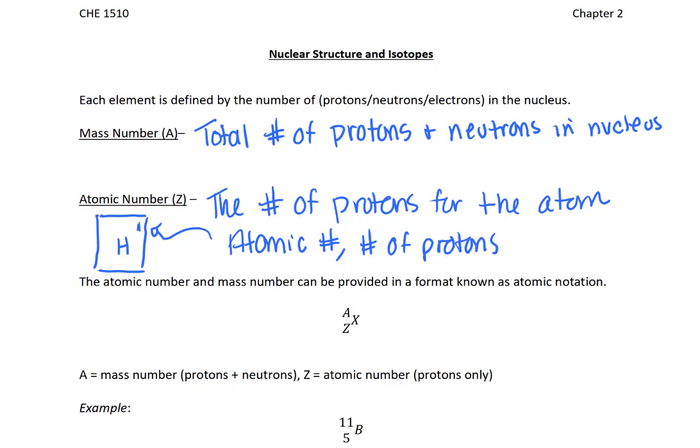So we can come back up to here and say that each element is defined by the number of protons in the nucleus. If that number of protons changes, then the identity of the element changes. So if you added a proton, you don't have hydrogen anymore. Now that you have two protons, you have helium.